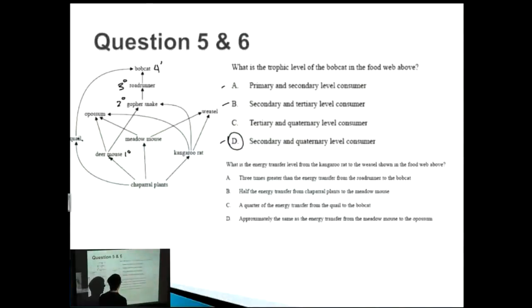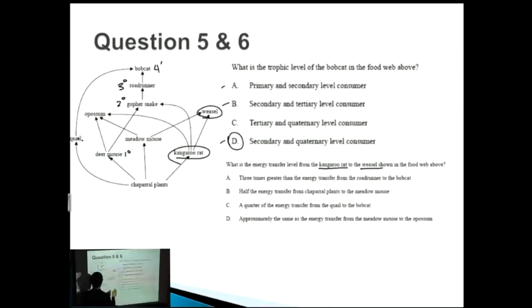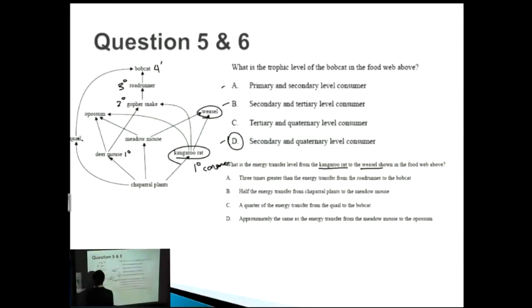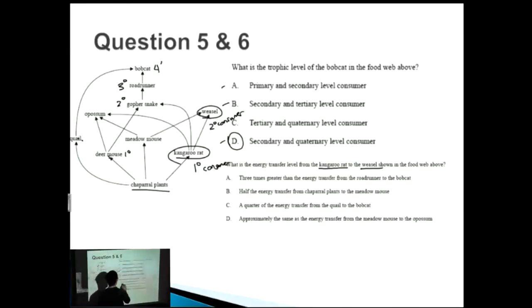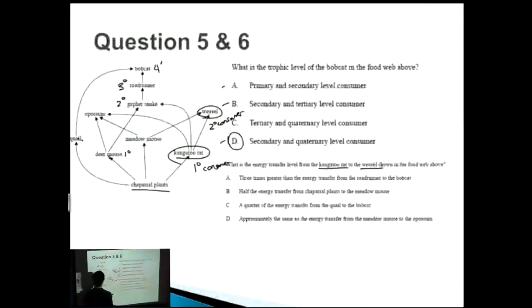Next question: what is the energy transfer level from the kangaroo rat to the weasel? We isolate the kangaroo rat and the weasel and think about their trophic levels. The kangaroo rat is a primary consumer — it consumes chaparral plants. The weasel is a secondary consumer. So we want to compare them with another primary-to-secondary consumer transfer. Option A says three times greater than the energy transfer from the road runner to the bobcat — you'd expect some energy transfer going primary to secondary, but three times? Not sure — we'll put a dot next to that one.